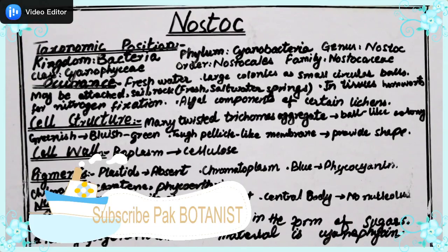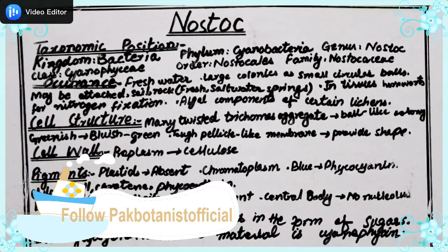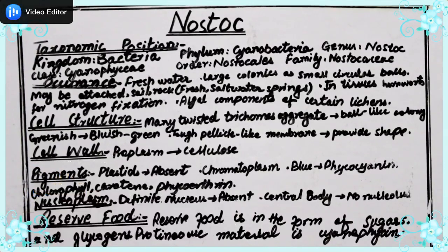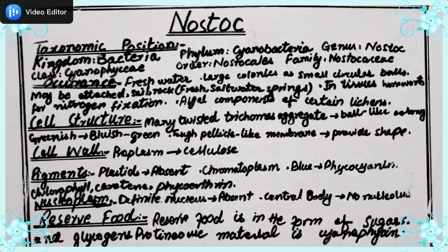Assalamu alaikum viewers, hope the best of your health and iman. Today's topic is Nostoc. We are going to discuss what is Nostoc — cyanobacteria — and the most important species of the genus Nostoc. We will see its taxonomic position, characteristics, cell structures, reproduction, reserve food, morphology, and more.